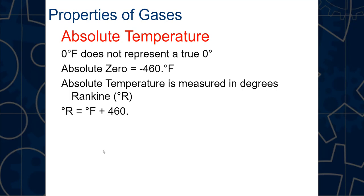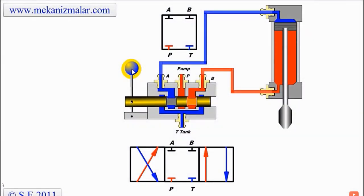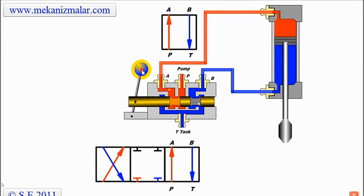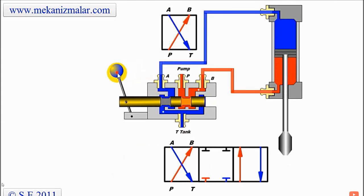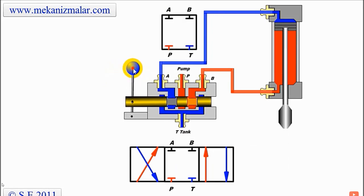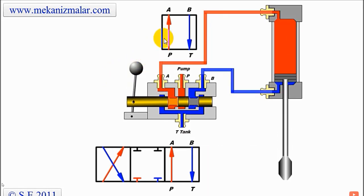Absolute temperature: zero degrees Fahrenheit doesn't represent true zero — absolute zero is negative 460 degrees Fahrenheit. We'll be using absolute temperature measured in Rankine for standard measurements; metric would use Kelvin. To convert to Rankine, take your temperature in Fahrenheit and add 460 degrees. For example, if the temperature is 65°F, the absolute temperature is 65 + 460 = 525 degrees Rankine.